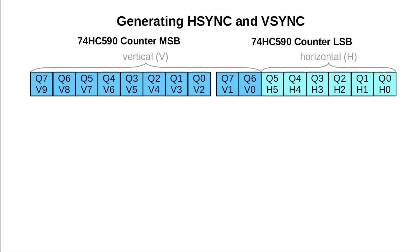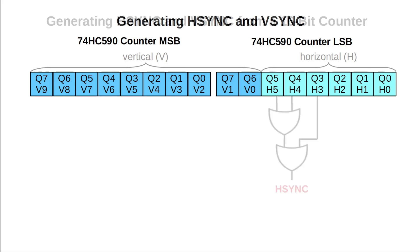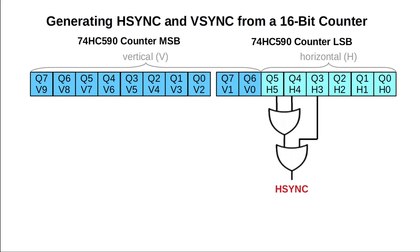Now let's generate the H-sync pulse. Here you can see our 16-bit counter with the LSB on the right and the MSB on the left. H-sync should be low for ticks numbers 0 to 7 and high above, repeating every 64 ticks. In other words, only if bit 3 or bit 4 or bit 5 are high, H-sync should be high as well. To detect that we can simply use these two OR gates.